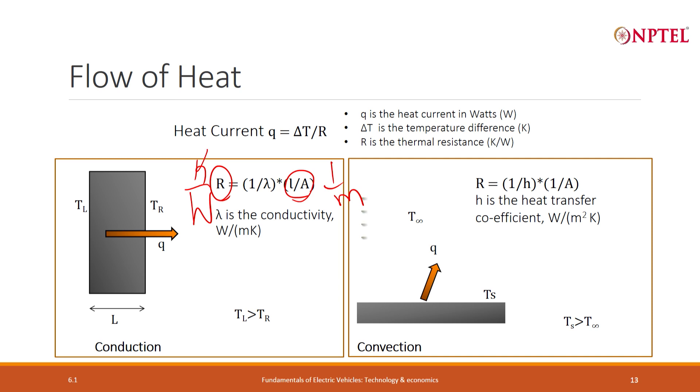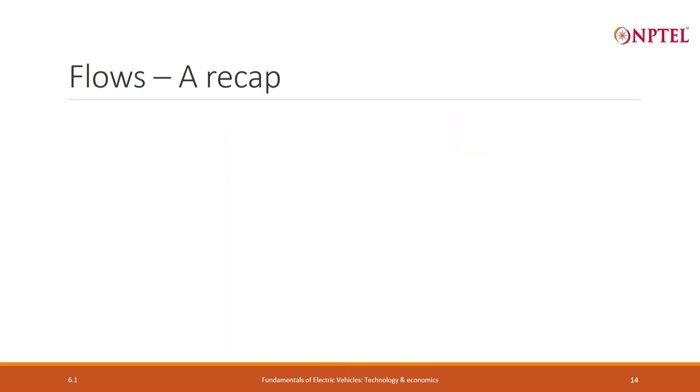Here the resistance will be expressed as, instead of 1 by lambda, I have a different parameter called 1 by H, where H is called the heat transfer coefficient. But instead of L by A, I have just 1 by A. What this tells us is that H has a different dimension compared to lambda. There is an M square instead of M. The dimension of length is absorbed in the heat transfer coefficient called H.